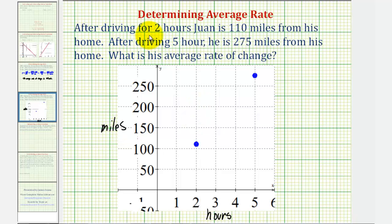To represent that after two hours, Juan is 110 miles from his home, we would have this point here with coordinates two, 110.